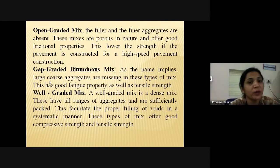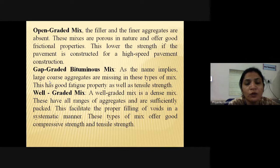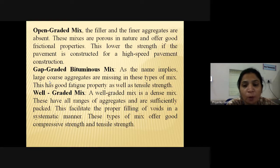In open-graded mix, filler and finer aggregate are absent; these mixes are porous in nature and offer good frictional properties but lower strength, suitable for high-speed pavement construction. In gap-graded bituminous mix, large coarse aggregates are missing; this type has good fatigue properties and tensile strength. A well-graded mix is a dense mix containing all ranges of aggregates, sufficiently packed to properly fill voids; these offer good compressive and tensile strength.